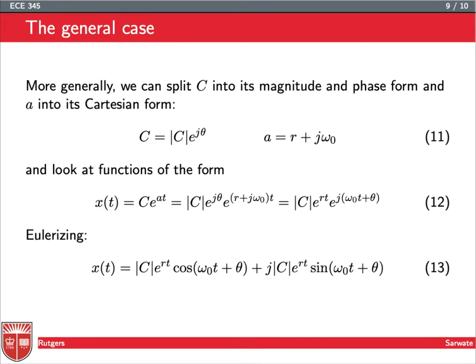So, if we want to look at the very general case of complex exponentials, we can split this constant C into its magnitude and phase form, or its Cartesian form. So, we're going to write the C in terms of magnitude phase and the A in terms of Cartesian. And then we plug in, and we can see that we get a constant times e to the rt times e to the j omega naught t plus v. So, we're putting all the complex stuff upstairs in this exponent and all the real part outside multiplying it. So, if we Eulerize this, we can see that we just have to Eulerize this complex exponential here, and we get a cosine term and a sine term.